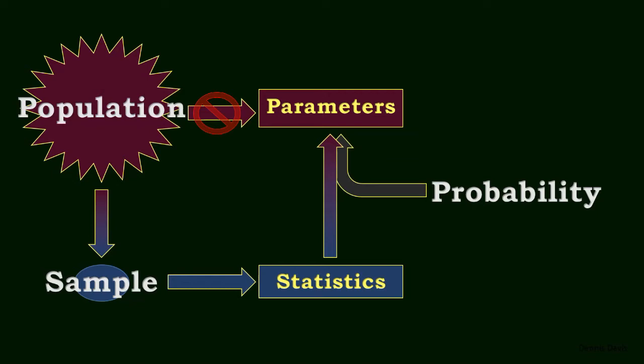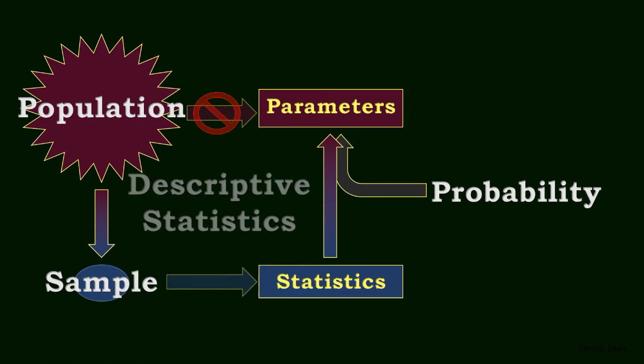We have already mentioned descriptive statistics, and this is where most courses begin. On this diagram, descriptive statistics are denoted by the right word arrows from populations and samples since they apply to both.